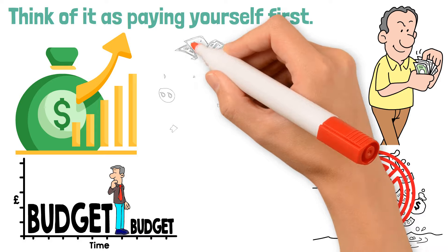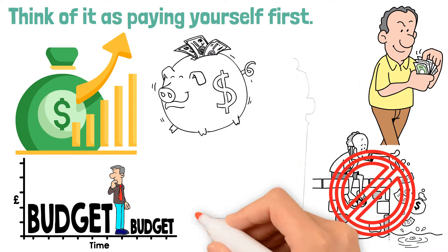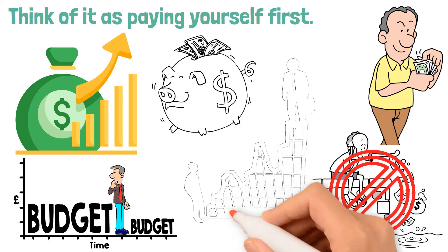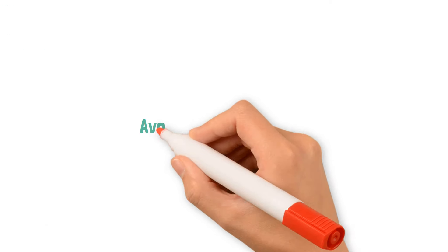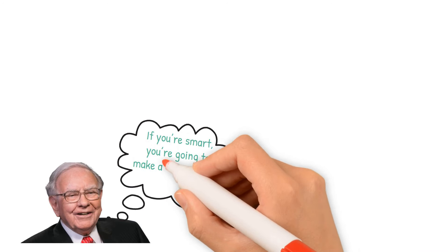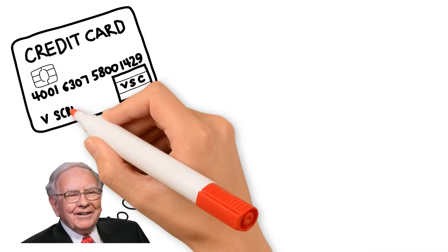So adjust your financial habits to save first and spend later. This simple shift in your approach to handling money can have a profound impact on your financial health. The next tip is avoid credit card debt. Buffett puts it straightforwardly. If you're smart, you're going to make a lot of money without borrowing.